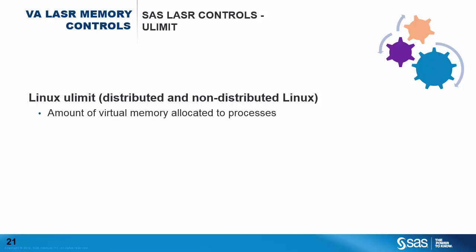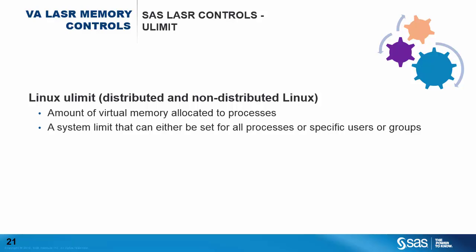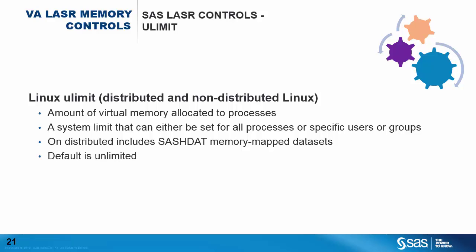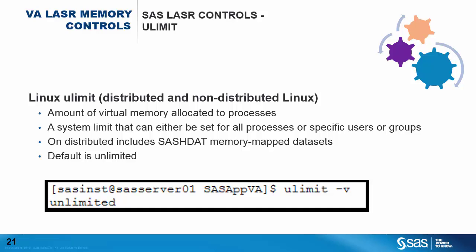The next control is a Linux system-level control. uLimits control a variety of resources within Linux, and the specific limit we want to control is the virtual memory allocated to processes. A system-wide limit can be set for all processes, or the limits configuration file can be configured to limit by accounts or groups. On machines with a distributed LASR server, this limit would include SAS HDAT memory-mapped datasets. The default when setting up new Linux systems is unlimited, and you can determine the current setting for the existing shell using the -v option of the uLimit command.